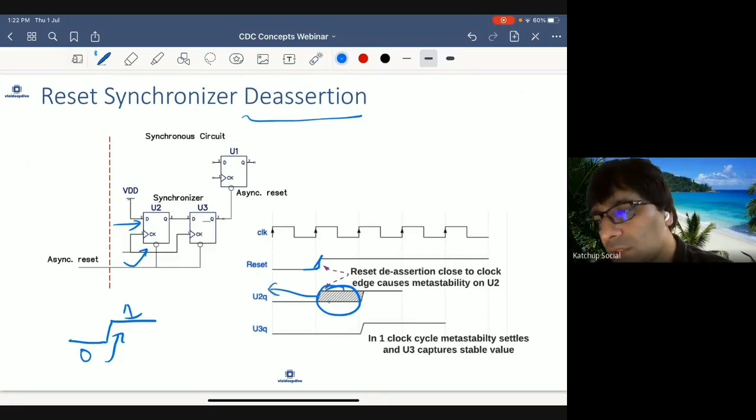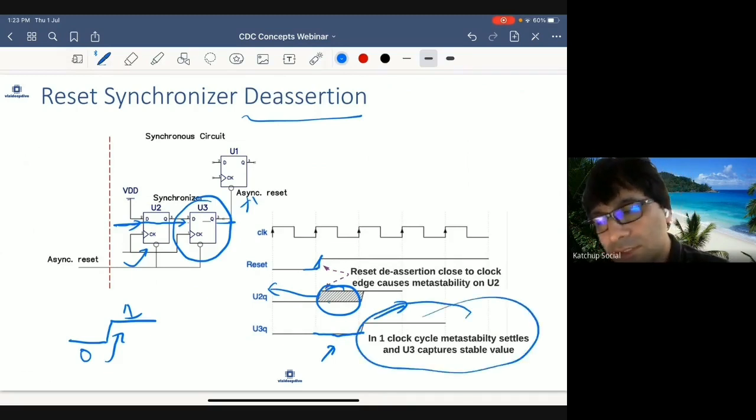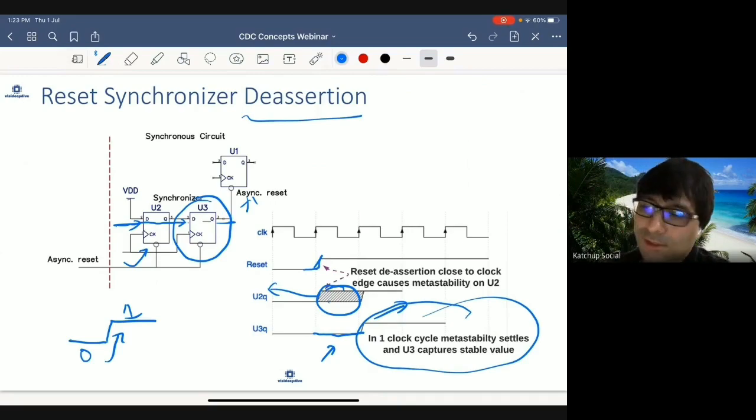The good part is, the value to the output is delayed by one cycle. So this flop provides that one additional cycle for the metastable flop to become stabilized. So metastability settles in this cycle, and then the correct value appears here. So again, adding a synchronizer, a reset synchronizer in this case, neutralizes the metastability.